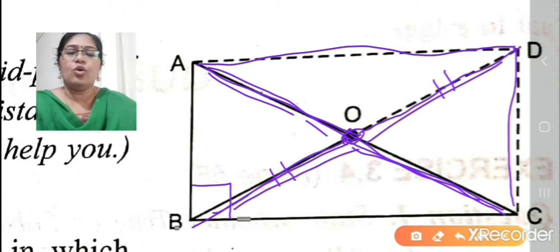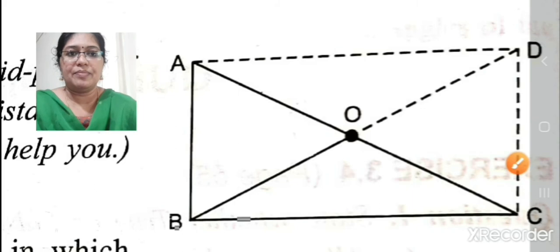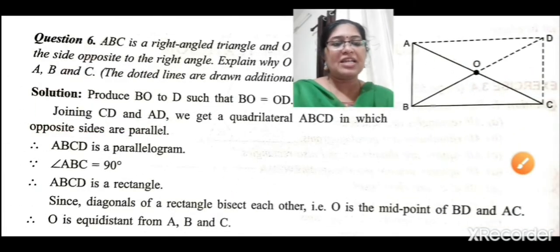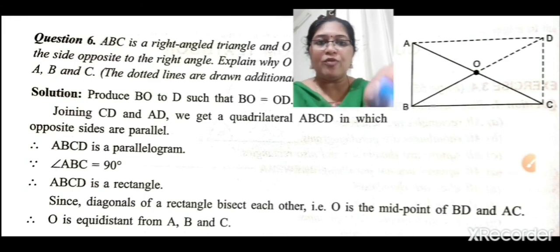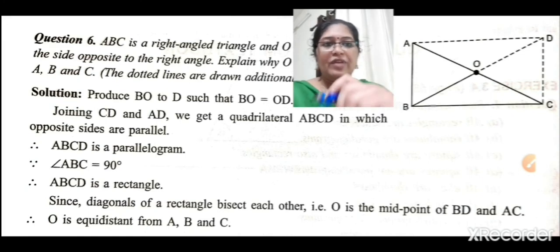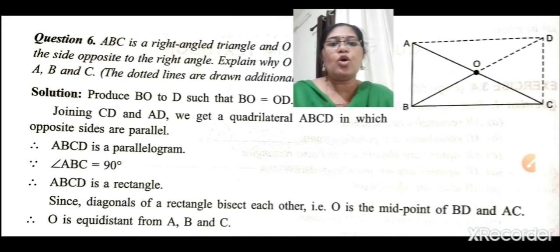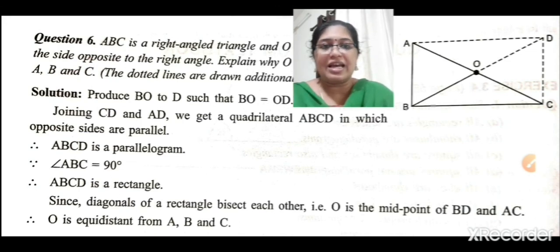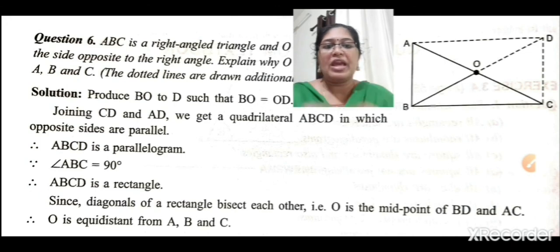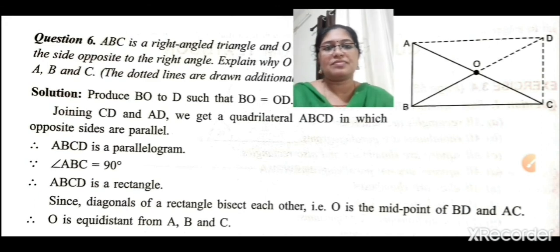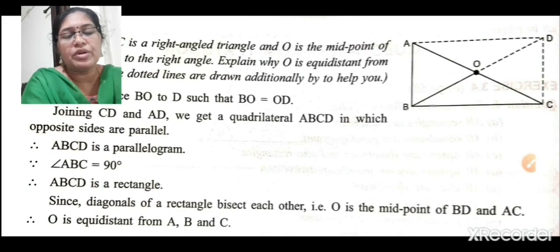Solution: produce BO to D such that BO equals OD, then join CD and AD to get quadrilateral ABCD in which opposite sides are parallel — so ABCD is a parallelogram. Since angle B equals 90 degrees, ABCD is a rectangle. Since the diagonals of a rectangle bisect each other, O is the midpoint of both BD and AC, so O is equidistant from A, B, and C. This is the last problem of the chapter.